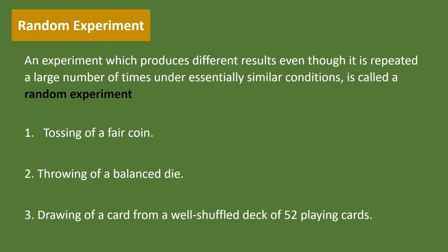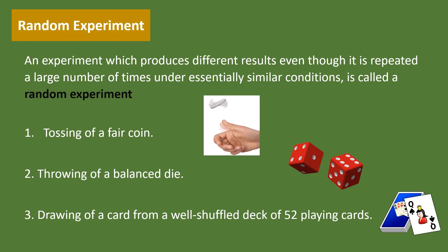Example 1: Tossing of a fair coin. Tossing of a coin there are two possibilities, head and tail. Tossing of a coin is a random experiment. Throwing of a balanced die, it has six possible outcomes. These are random experiments. Drawing of a card from a well shuffled deck of 52 playing cards, there are 52 possibilities. These are also called random experiments.